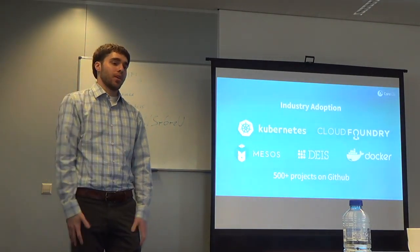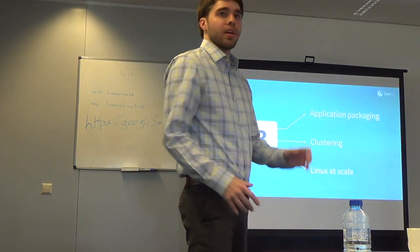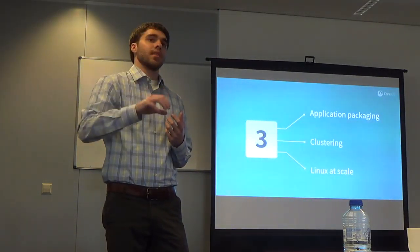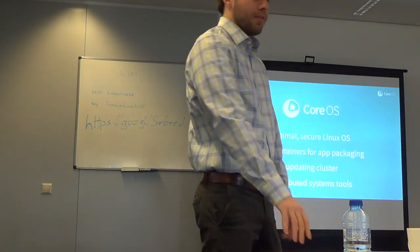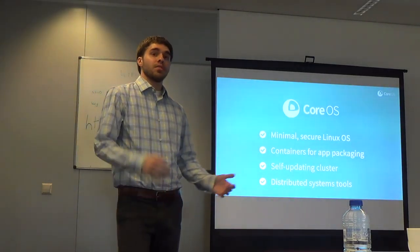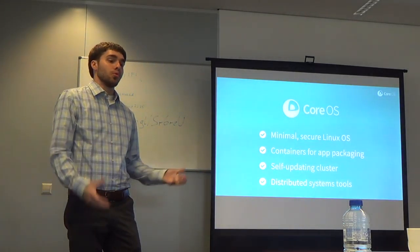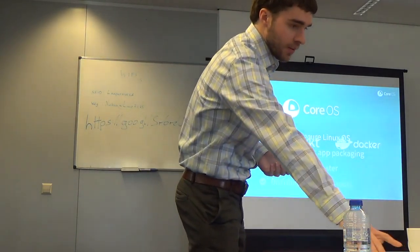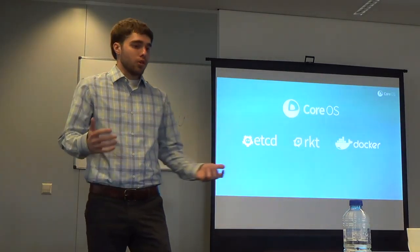We've tackled our three things — Linux at scale, application packaging, and clustering. We needed to make changes at each level to get something like Giphy. Recap: CoreOS is a minimal secure Linux distribution using containers for application packaging, self-updating, with distributed system tools. The tools we have so far: etcd, Rocket, Docker, and CoreOS itself.